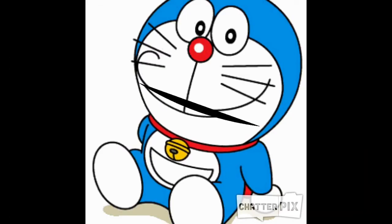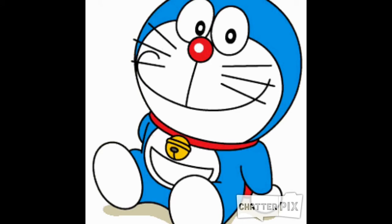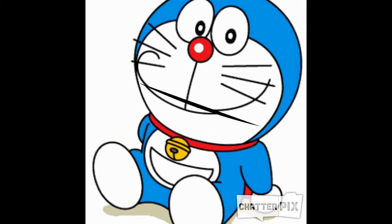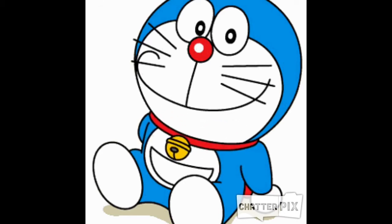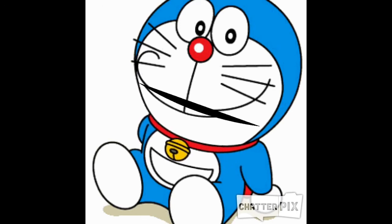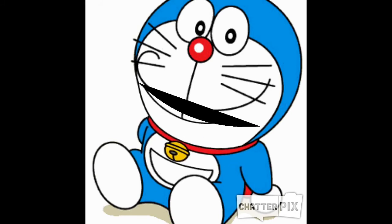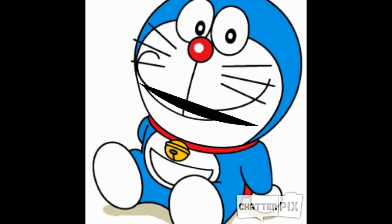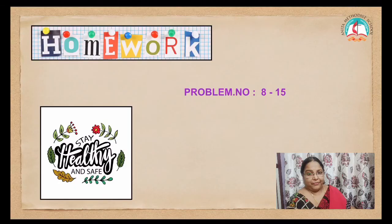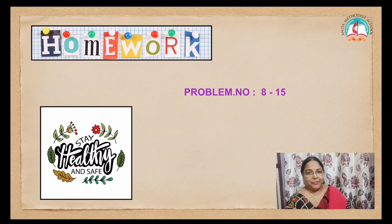To summarize: new ratio = old ratio minus sacrifice. If the old sacrifice share is not given, you find the remaining portion, then new share = old share × remaining portion. Problem numbers 8 to 15 is your homework. Please do it in your accountancy notebook. Stay safe. God bless you.